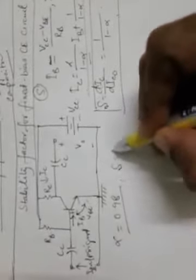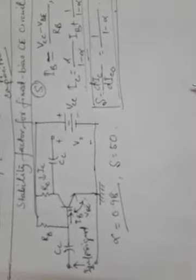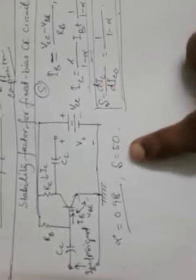Now if we assume alpha as 0.98 typically, from here we may get S equal to 50. Please remember: S equal to 1/(1 minus alpha) is the formula for the stability factor for fixed bias circuit. S equal to 50 means IC increases 50 times faster than ICO, and thus this circuit does not provide a stable operating point. Instead it provides immense scope for the transistor to be destroyed by thermal runaway.